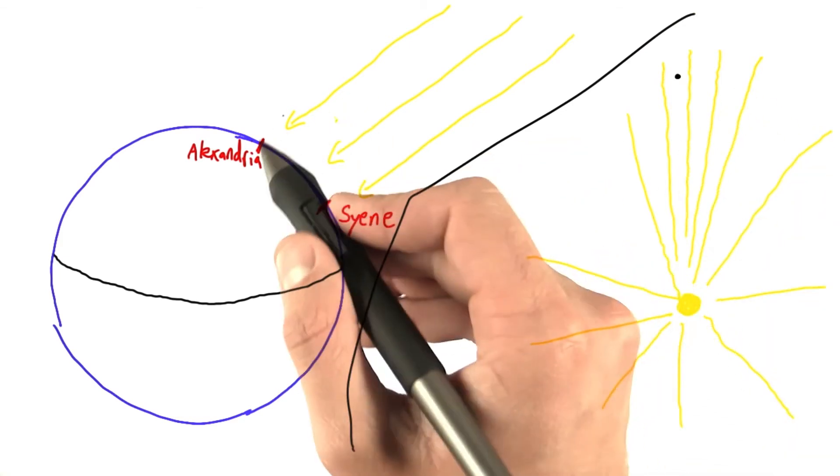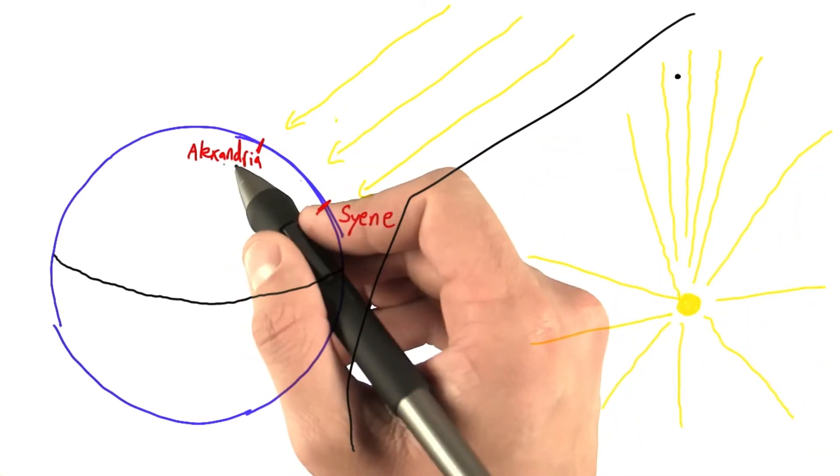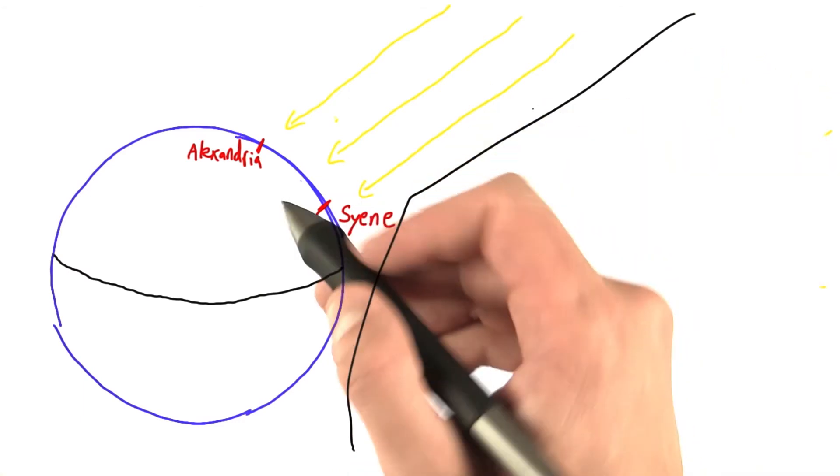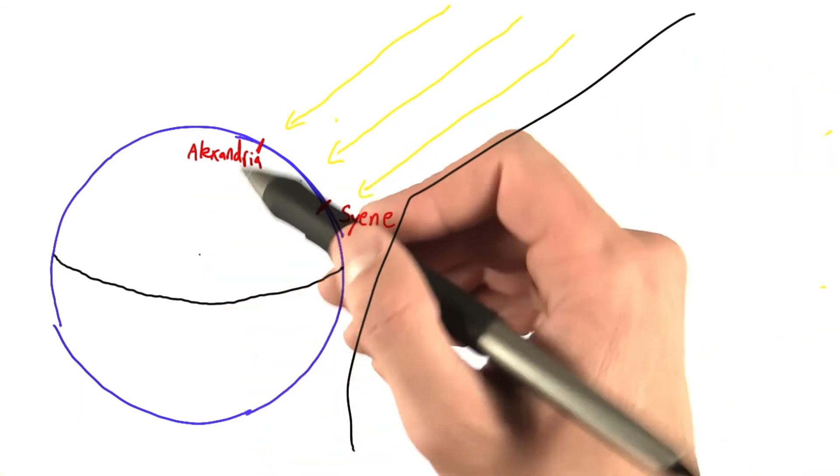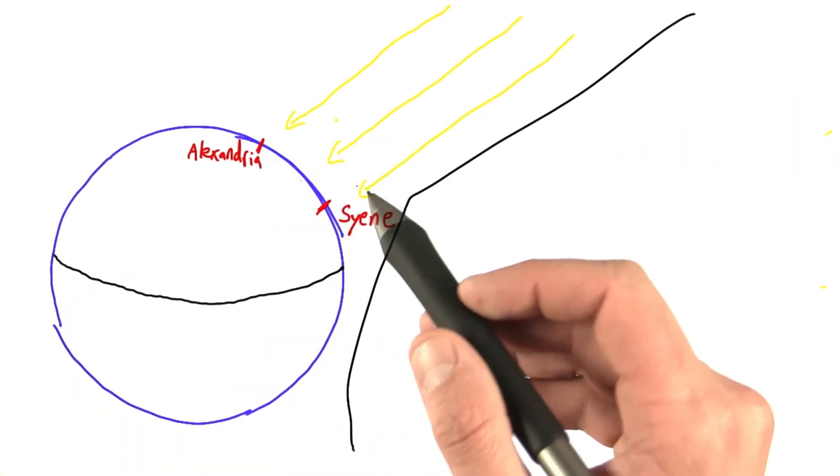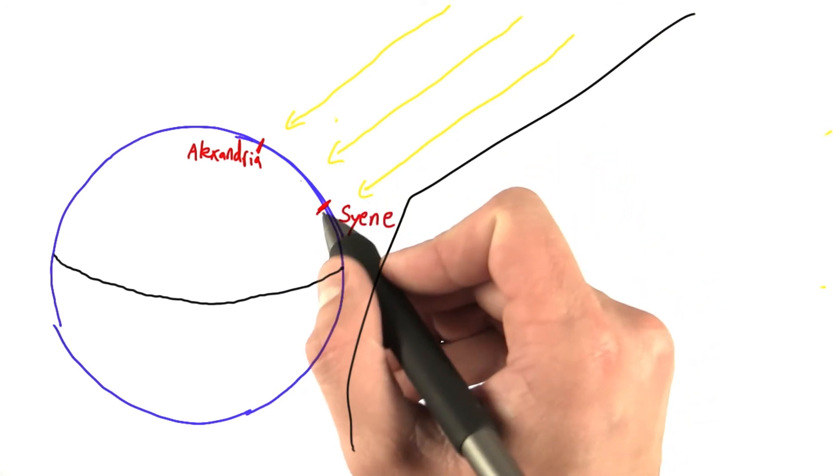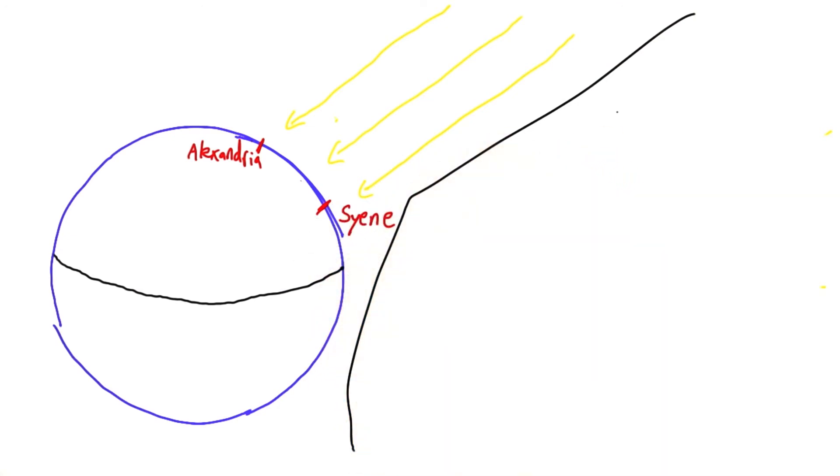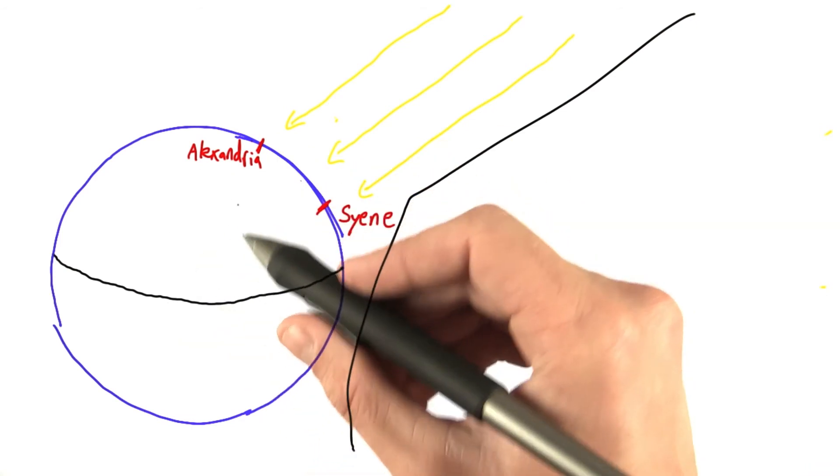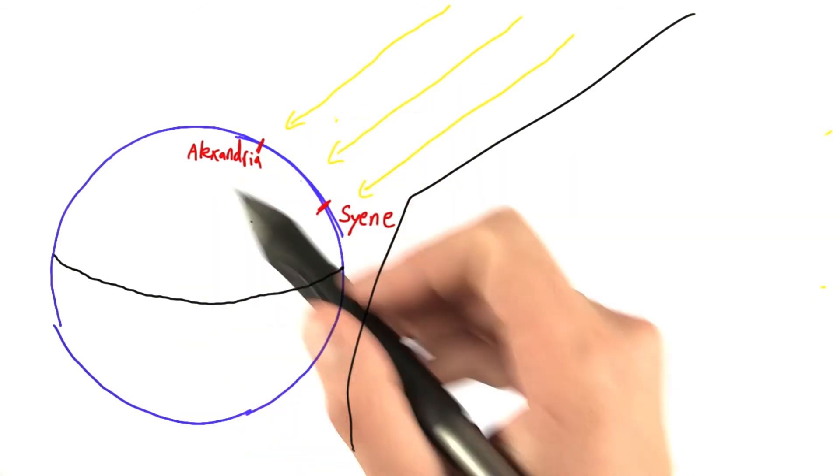Okay, so we have our rays arriving parallel at Siena and Alexandria. Now what? How am I supposed to figure out the circumference of the earth based on some parallel rays and the observation that they're striking vertically here at Siena? Well, before we jump into the calculation of the circumference, let's try and understand what's going on here first.